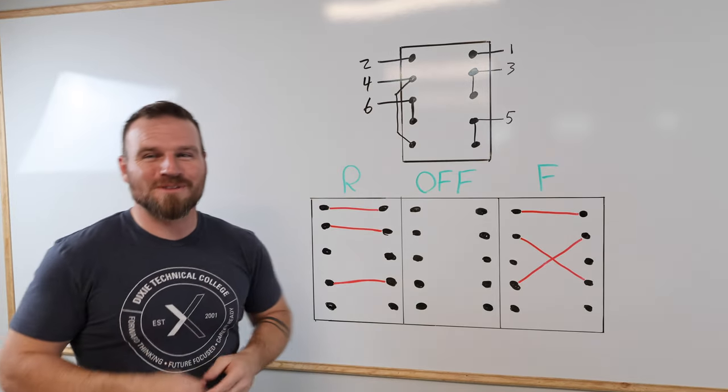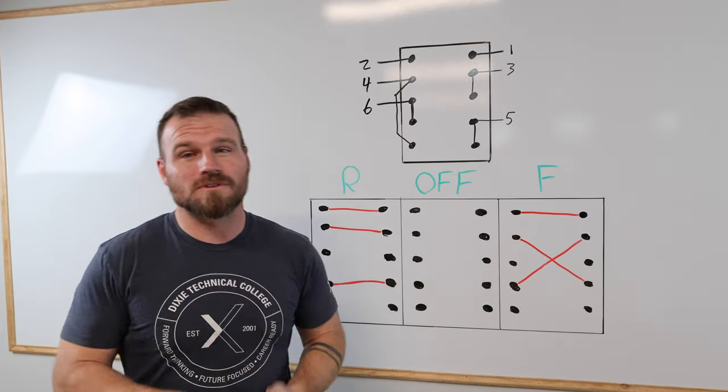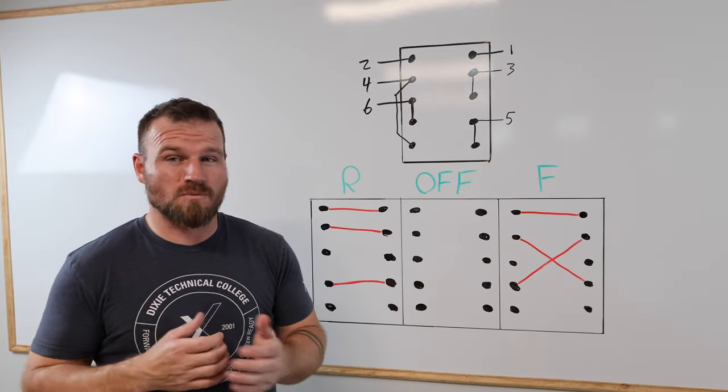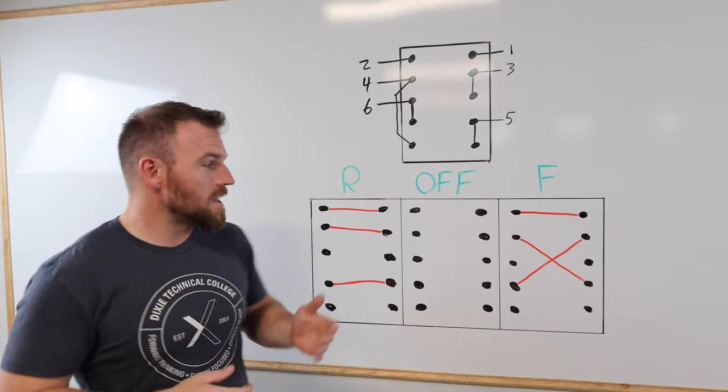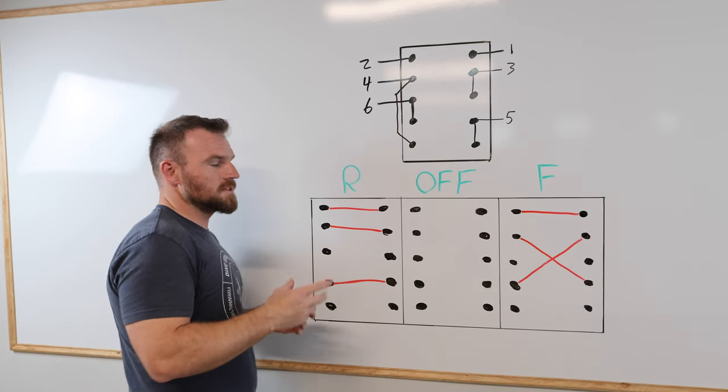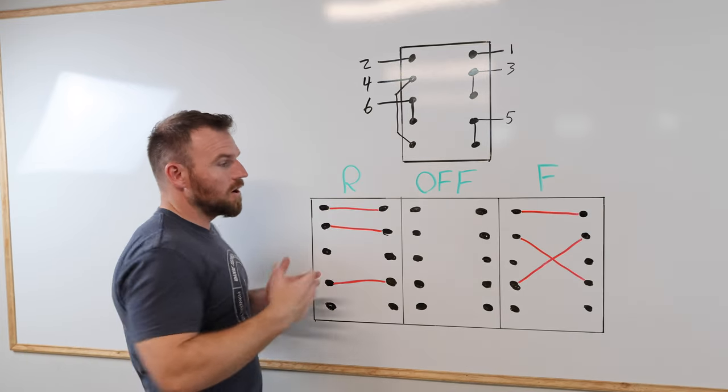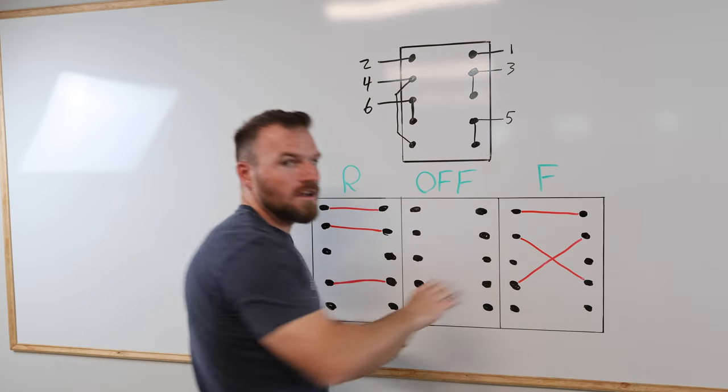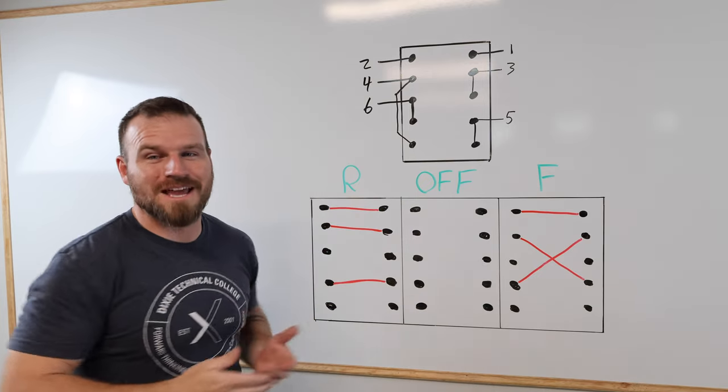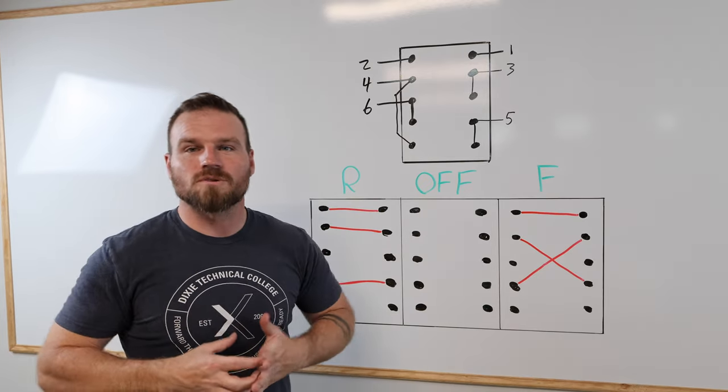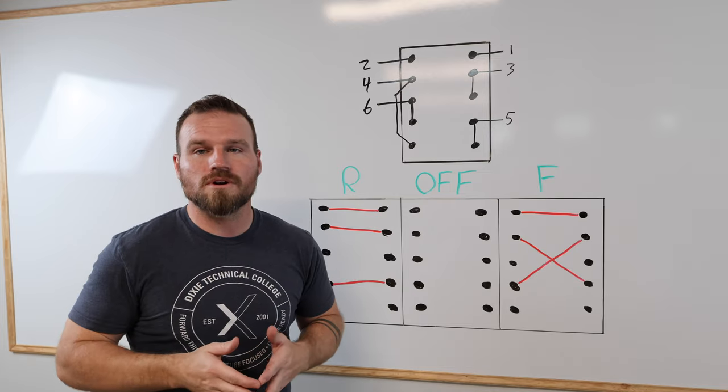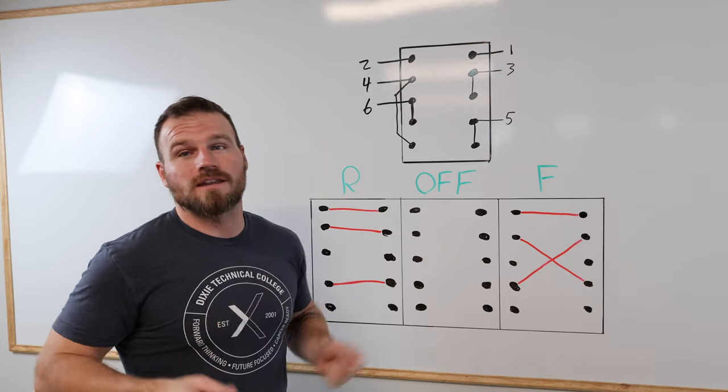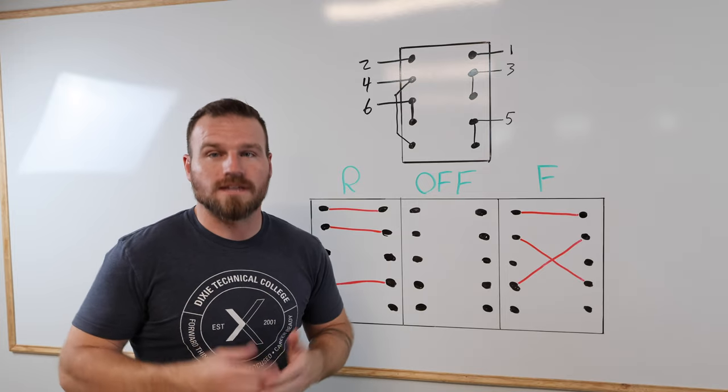Now when we're working with 120 volt motors, or 220 volt motors, we know that we can't just swap the polarity. We actually have to go in and change some of the wiring internally. And we're going to be using some of these contacts to do that work. Ultimately, it really comes down to the contacts here and here, which are the same contacts to do that switching. So what I want to do now is I'm going to show you guys the motor, we're going to talk over the schematic on the nameplate of the motor, and then I'm going to go ahead and show you how we'd wire these two things together.